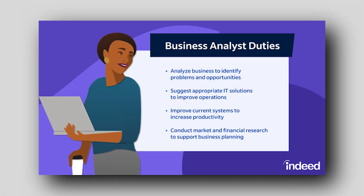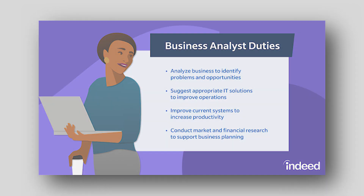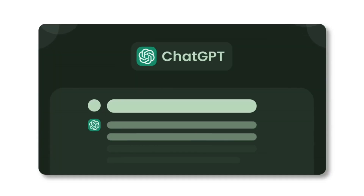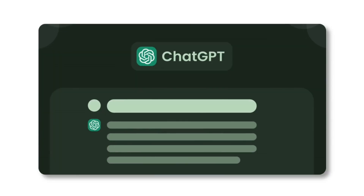We're also going to act as a Business Analyst or Program Manager. We'll take whatever code we've written and ask ChatGPT to convert it into user stories, create backlogs, and do grooming of those stories — all of this done using ChatGPT.